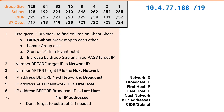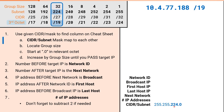Our first example problem will be 10.4.77.188 slash 19. Just like before, we will start by using the CIDR notation to find our column in the cheat sheet. We were given a slash 19, which puts us in this column. Next we will convert between subnet mask and CIDR notation. The subnet row in our column provides us with a value of 224. But remember, we are now in the third octet, which means we will still use the value of 224, but it now appears in the third octet. A slash 19 in CIDR notation equates to the subnet mask of 255.255.224.0.